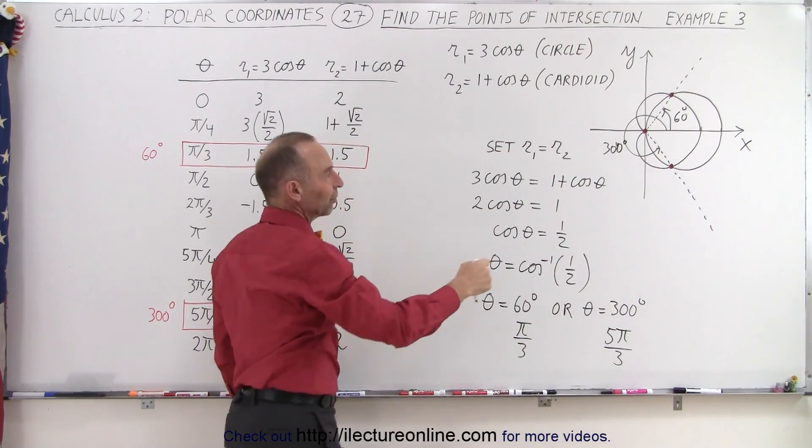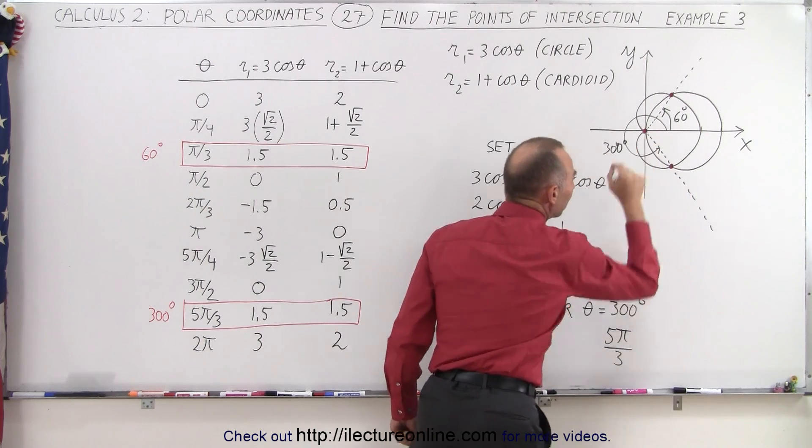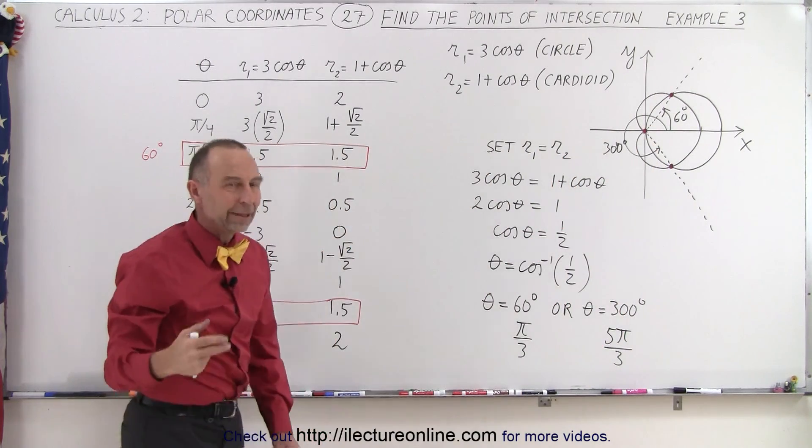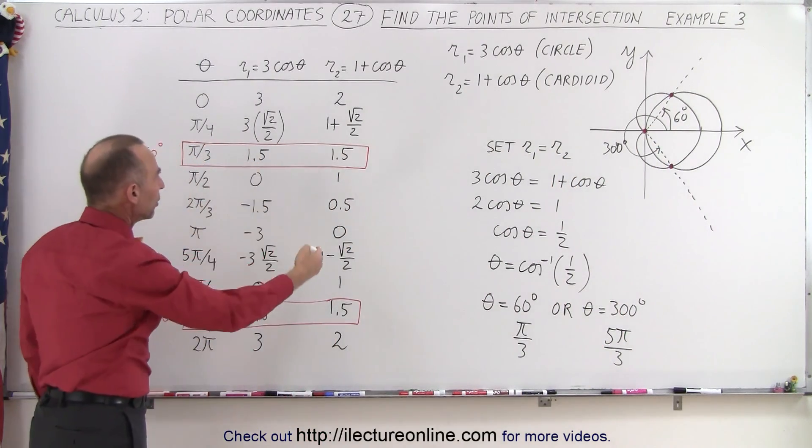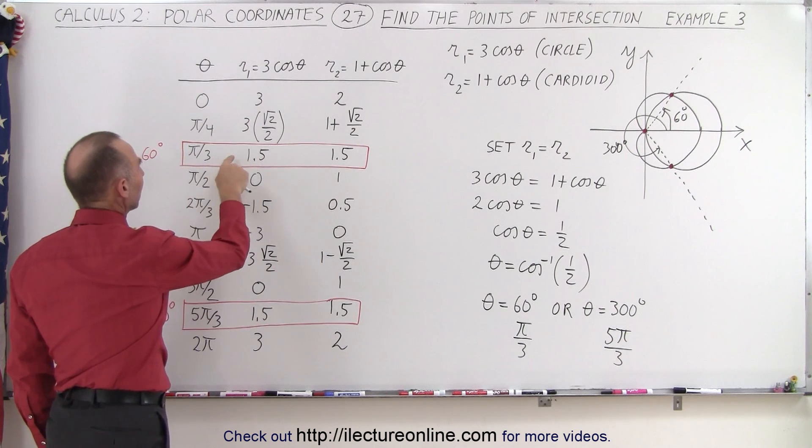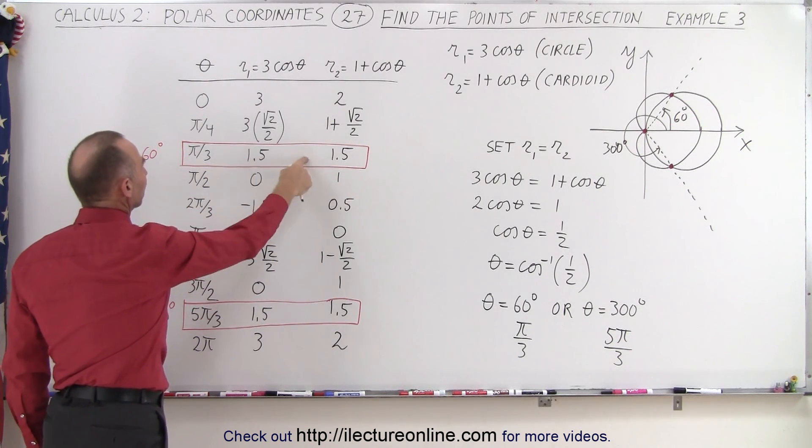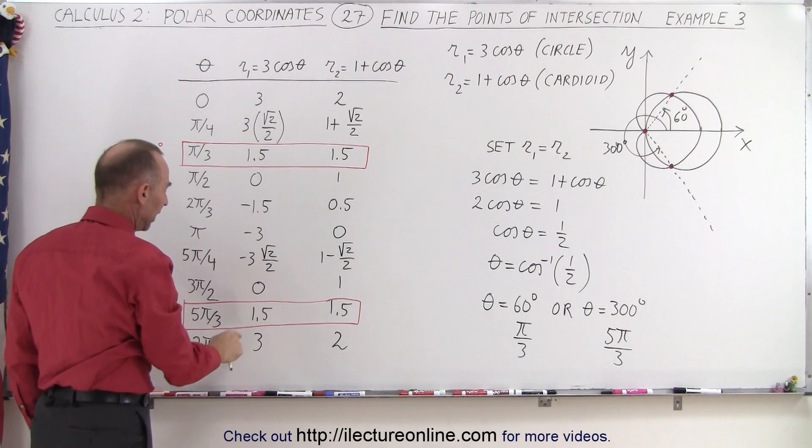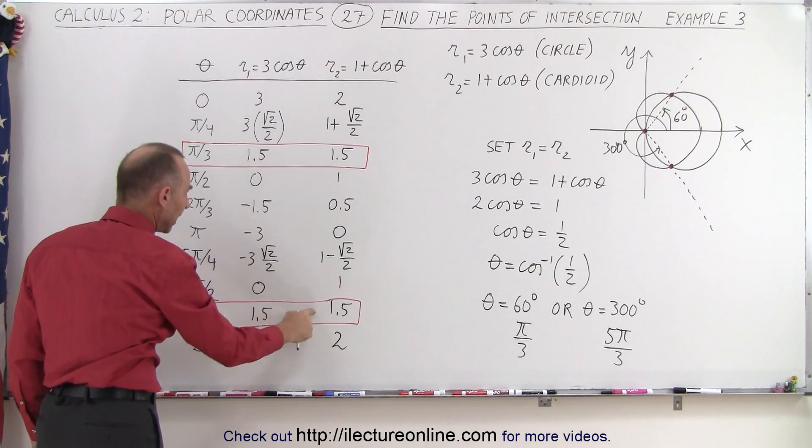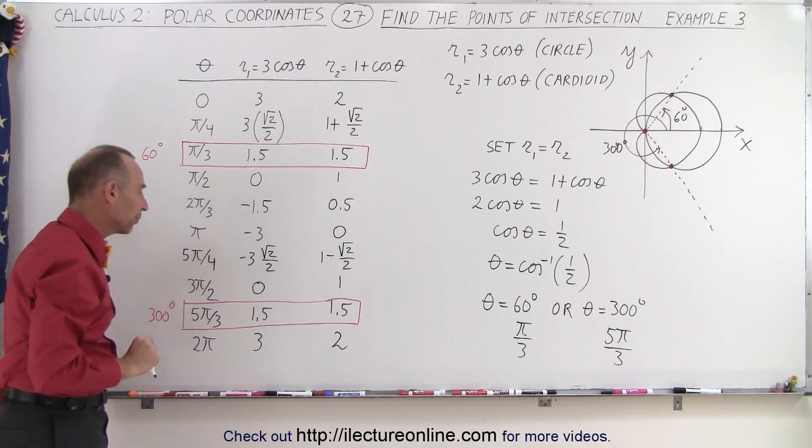And notice we found these two points using this methodology, but we didn't find the point at the origin. And the reason for that is, if we take a look here, notice that the value of 1.5 is reached for the function when we have an angle of 60 degrees, and the value of 1.5 is reached again with the function when we have an angle of 300 degrees.